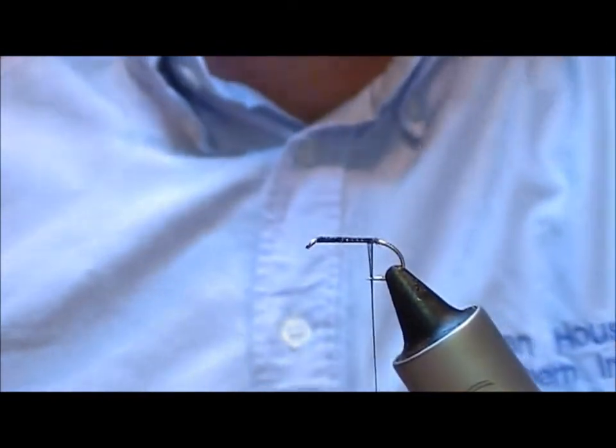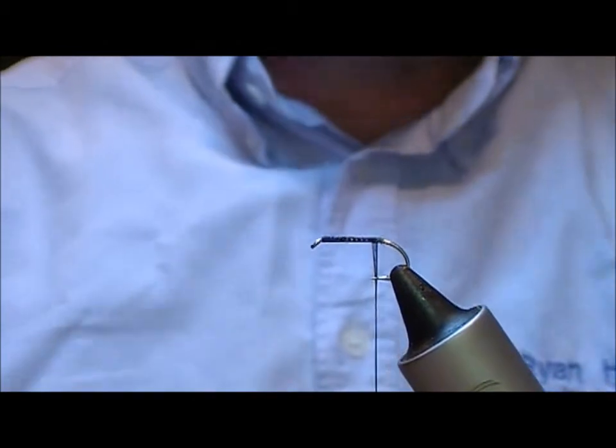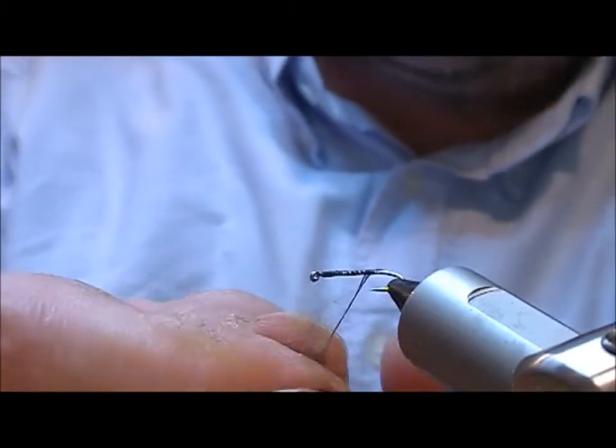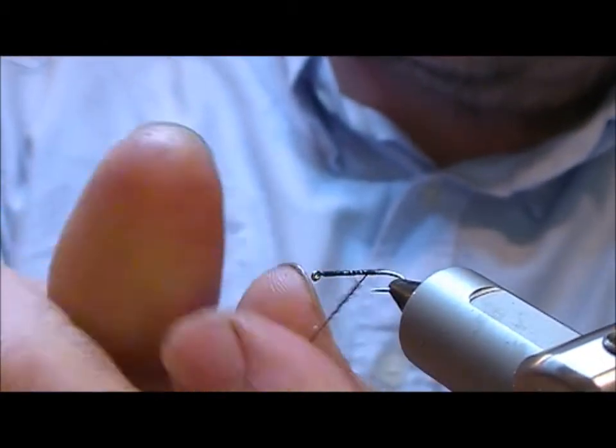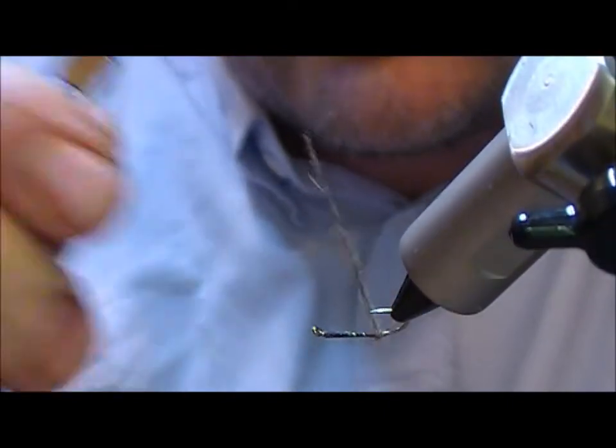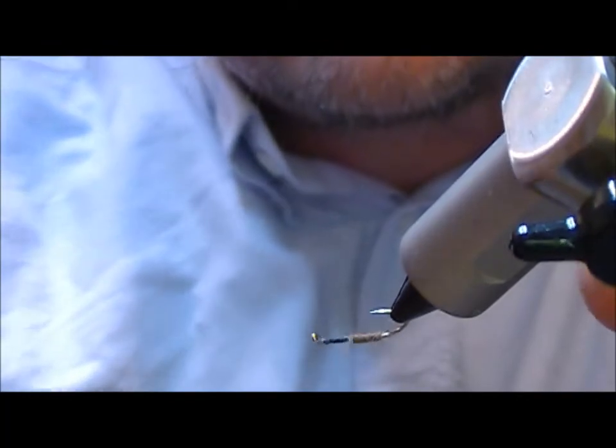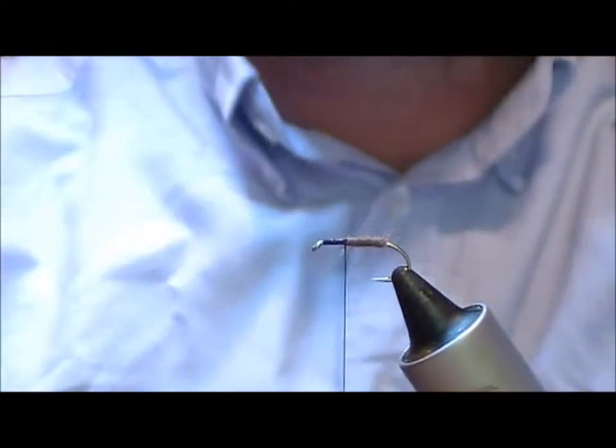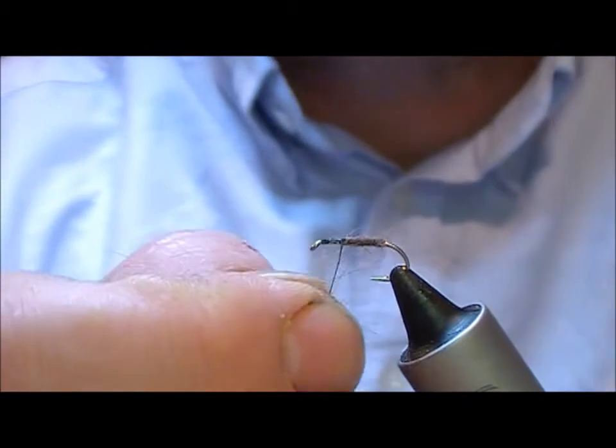So you put on a bit of wax on your thread and the body of this one is going to be a little bit of hair. So I'll place that on and then wrap a nice thin body forward.